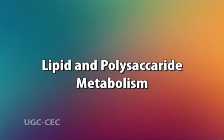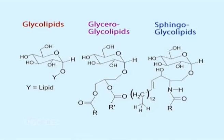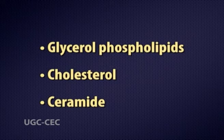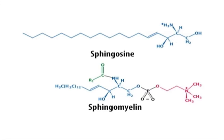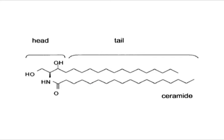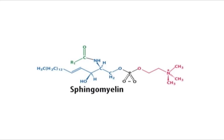Lipid and polysaccharide metabolism: in addition to processing and sorting glycoproteins, the Golgi apparatus functions in lipid metabolism, particularly in the synthesis of glycolipids and sphingomyelin. The glycerol phospholipids, cholesterol, and ceramide are synthesized in the ER. Sphingomyelin and glycolipids are then synthesized from ceramide in the Golgi apparatus. Sphingomyelin — the only non-glycerol phospholipid in cell membranes — is synthesized by the transfer of a phosphorylcholine group from phosphatidylcholine to ceramide.